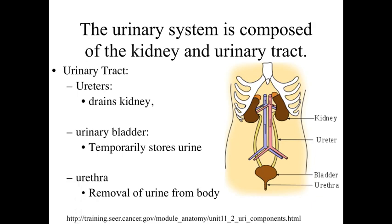In addition to the kidneys, we're going to have the urinary tract, which is going to take the materials that have been filtered out of the kidney and processed to produce urea, and essentially drain them from the kidneys, store them temporarily, and then remove them from the body. The urinary tract is going to be composed of the ureters, which are going to be involved with draining the kidneys — collecting the urine and transporting it into the urinary bladder. The urinary bladder is going to be a distensible structure that is able to expand as it fills, temporarily storing the urine. It's going to have a muscular wall so that you can constrict it and squeeze out the urine. When that occurs, the urine is going to be flowing through the urethra and voided from the body.